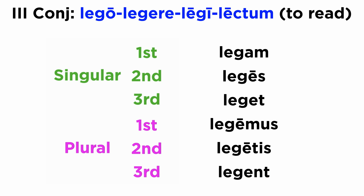As you will notice, after dropping the infinitive ending -ere, an -a is added to the stem of the first person singular, only to switch immediately to an -e for all the other persons. After that, you will see the usual personal endings, so it's not too difficult after all.